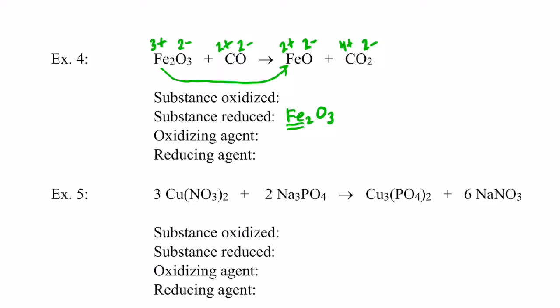Carbon went from two plus to four plus, so to do that it had to lose electrons. The carbon in carbon monoxide was oxidized. The oxidizing agent is the species that contains the element reduced, so that would be Fe₂O₃, and the reducing agent is the species that contains the element oxidized, so that would be CO.